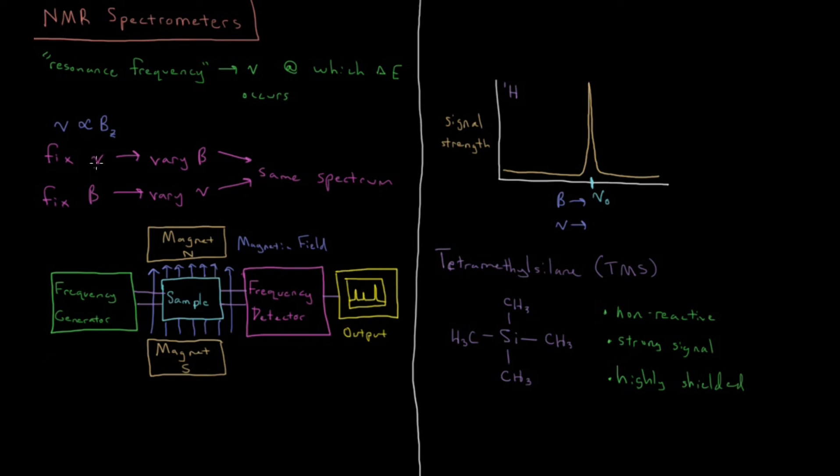And as we said, so we can either change this nu or we can change the B. A lot of what determines the strength of an NMR spectrometer is going to be the frequency at which it operates. And there are a number of common frequencies at which NMR spectrometers operate.